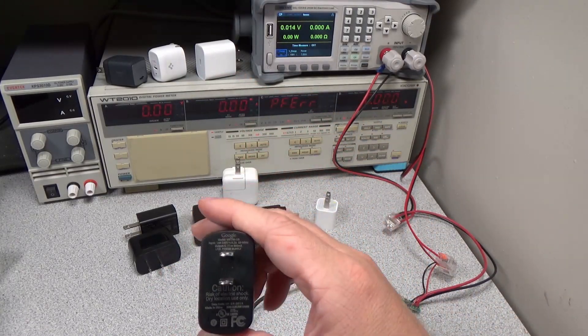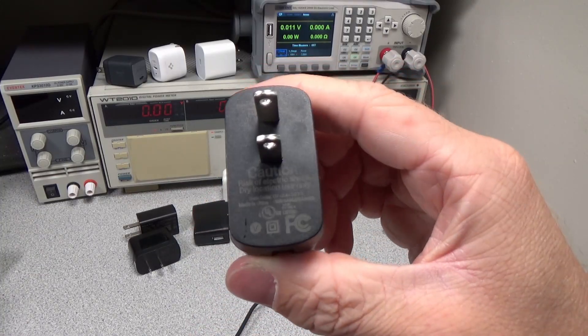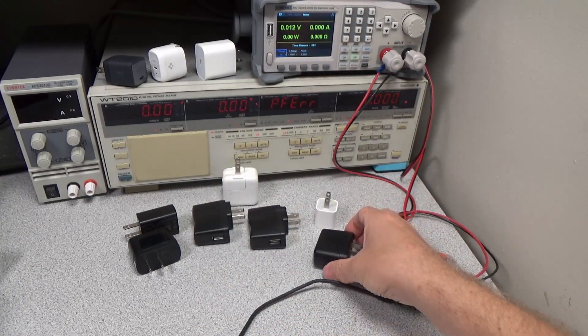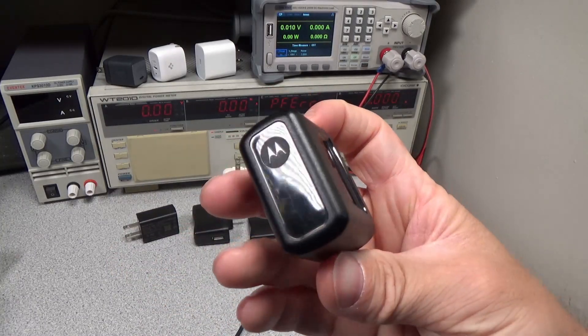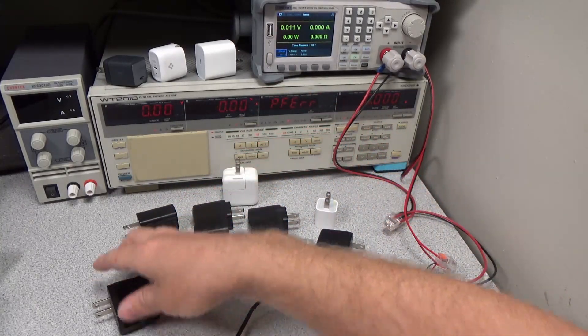First is a Google USB-A adapter, 5 volts out and 850 milliamps. Next is a Motorola USB-A adapter, also 5 volts and 850 milliamps. This came with the original Droid phone.